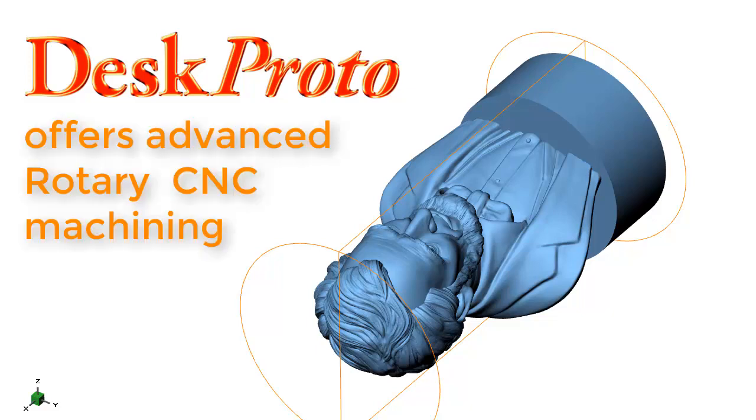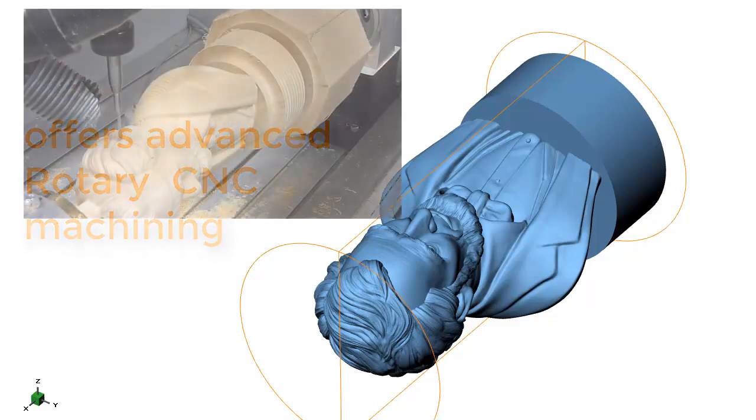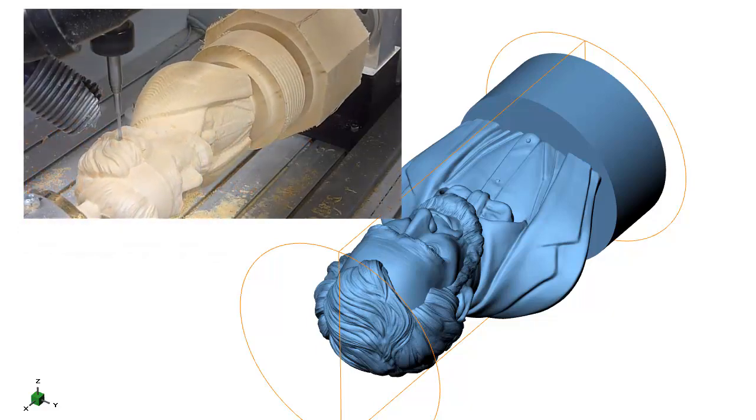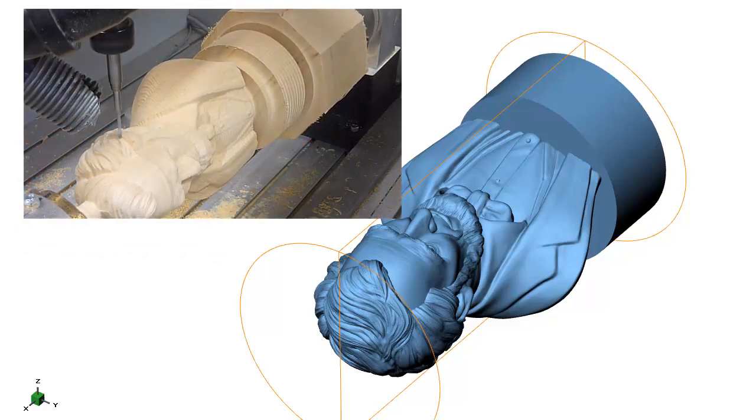When rotary machining, the cutter normally will not travel below the rotation axis. The block rotates, so every side of the block can be machined while it is on top.